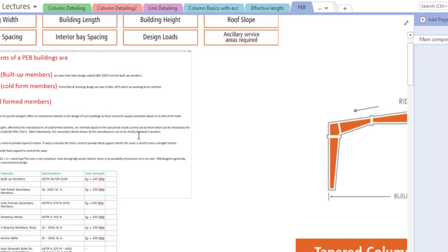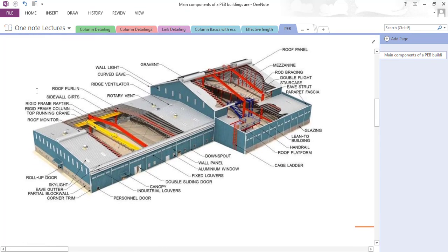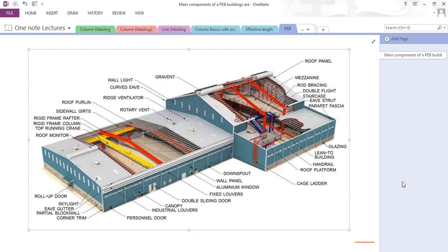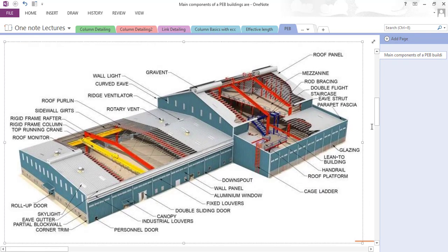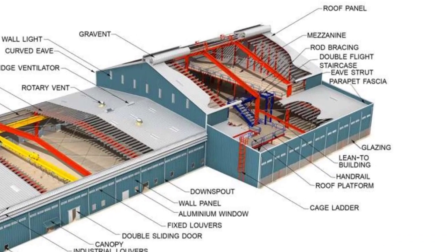I am sharing a picture to give you a brief overview of the major components in a pre-engineering building. You can observe this picture — I hope it is clear. Each component is labeled in this shed diagram. All of you have some awareness about PEB components, but let me go through them one by one.